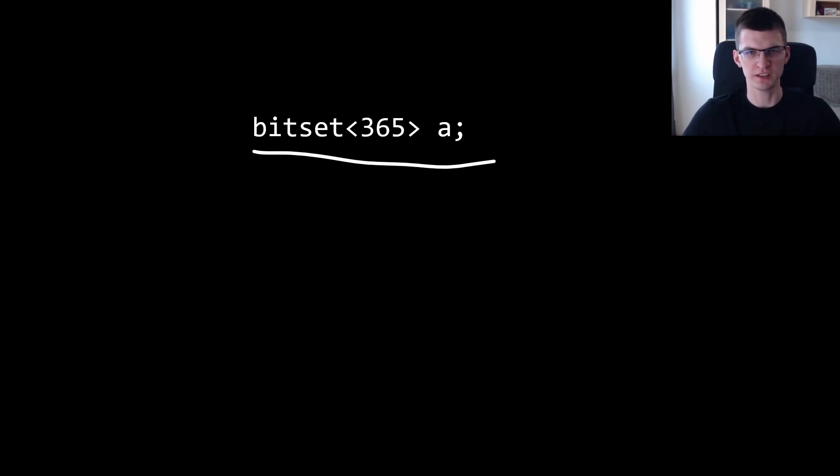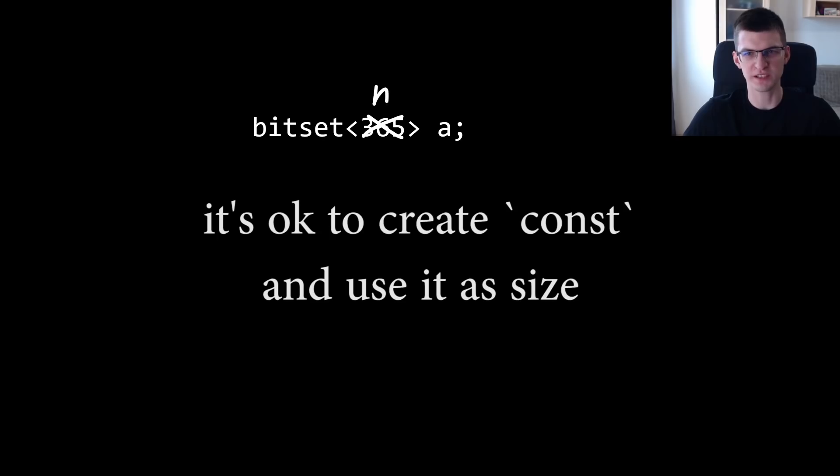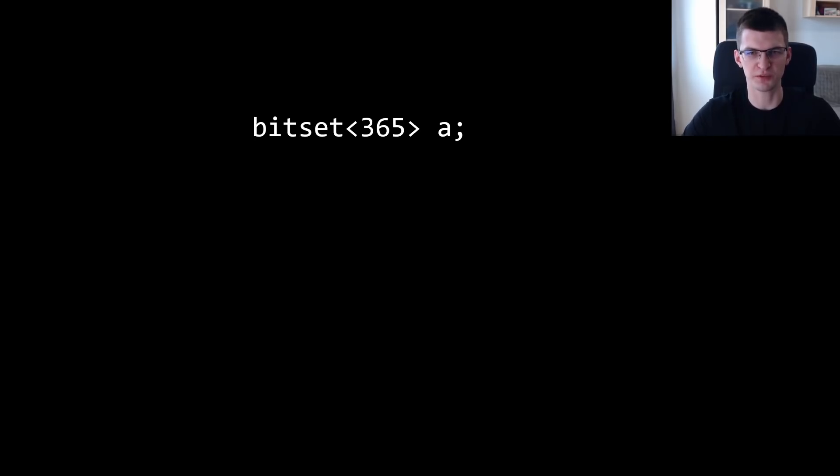This is how you create one. This will be a bitset of size 365 - in general this must be a constant. You cannot read n and then say you create bitset of size n. Compiler must know this size so it would split it into those chunks of some number of bits. Under the hood bitset is just an array of for example unsigned long longs and this is why compiler needs to know what is that array size.